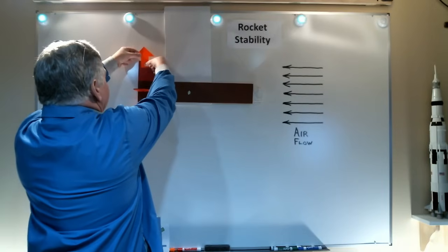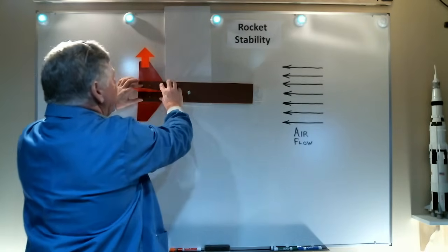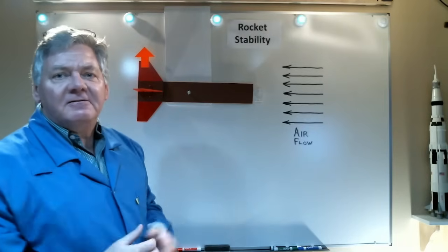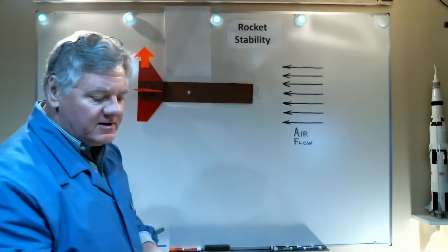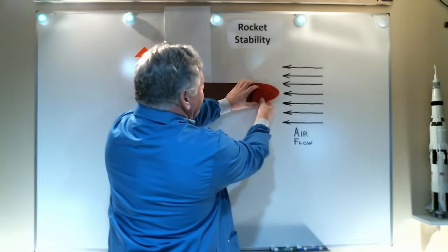So, we have fin lift. Now, that's not a very efficient configuration for this rocket. We don't want a blunt end on our rocket. So the next thing we do is place a nose cone to make the rocket more aerodynamic.